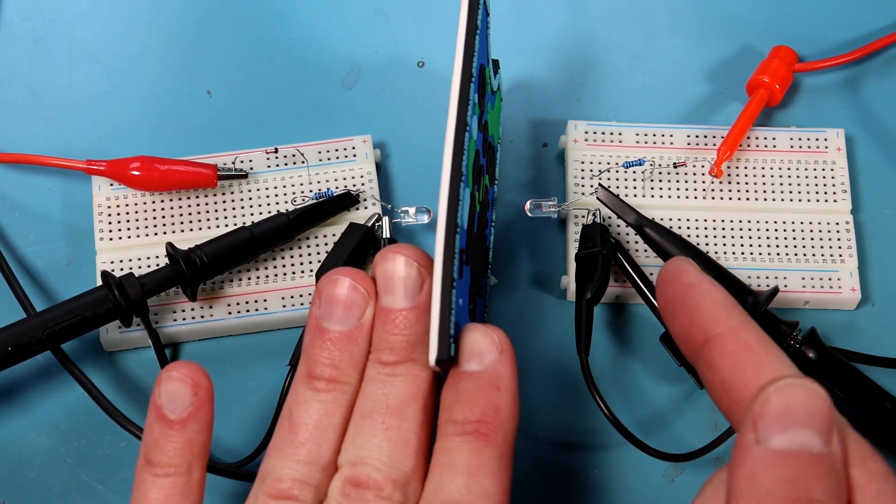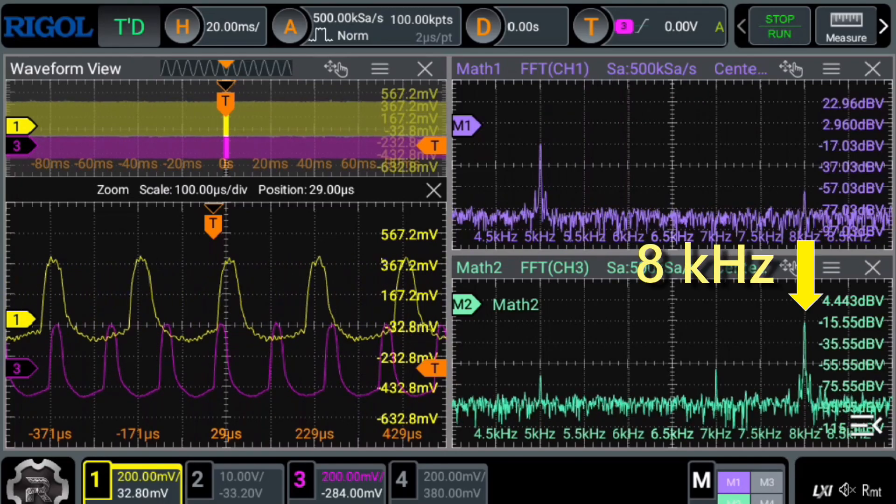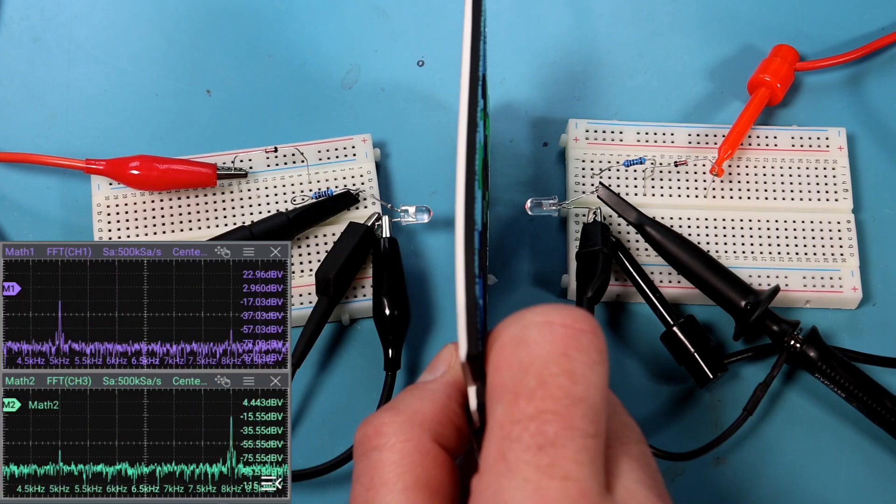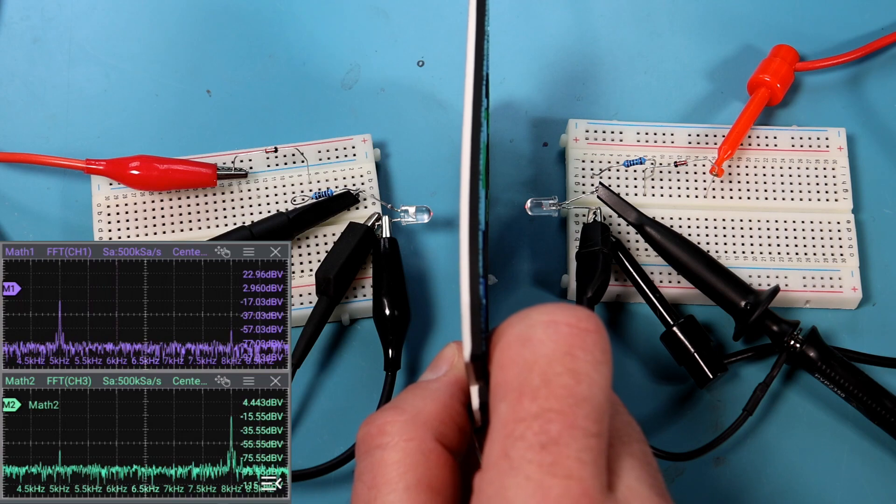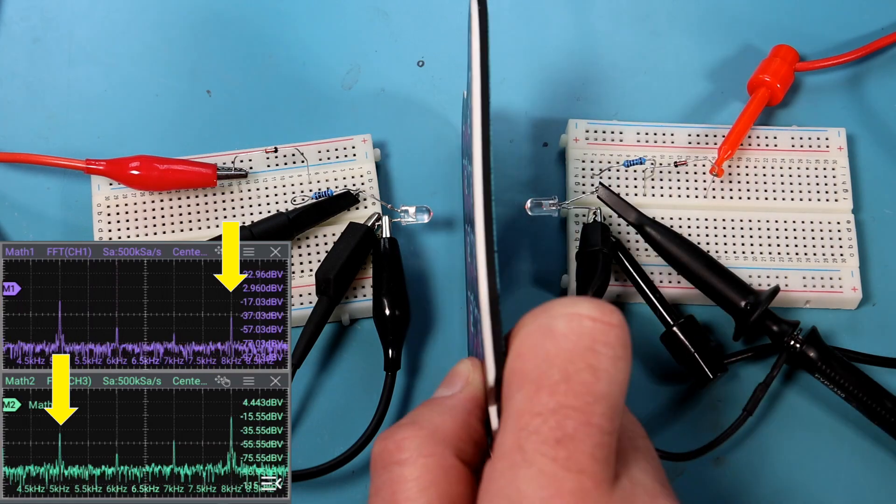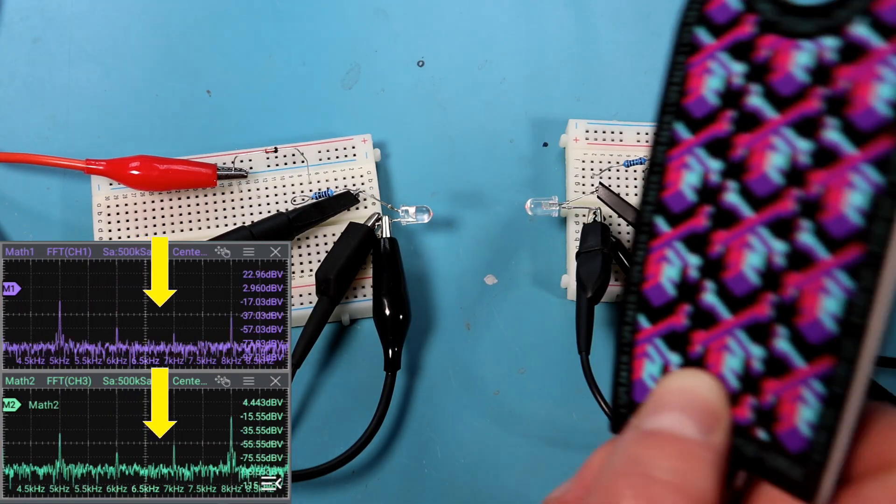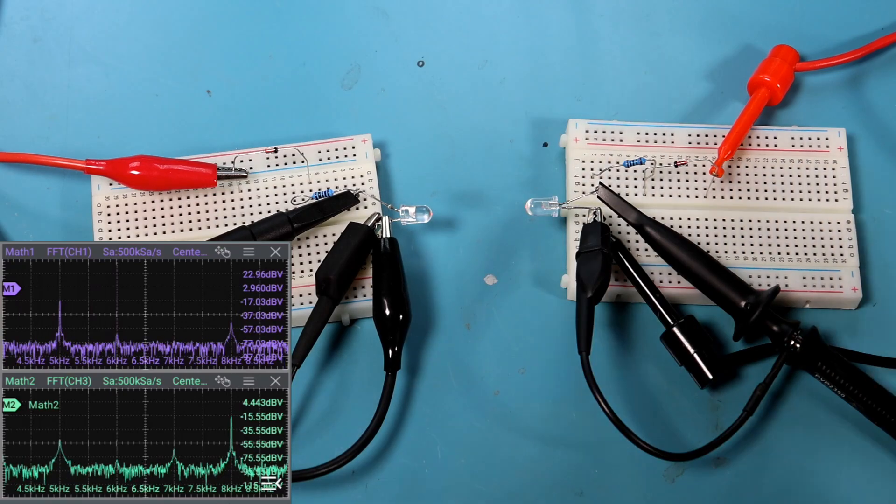Notice how when we look at the spectrum of the signal on each LED, we see the driving tones, 5kHz for the left, and 8kHz for the right. However, when we remove the optical barrier, we suddenly see both tones on both sides. The LEDs are both transmitting and receiving. You can also see some mixing products as the two tones and their harmonics and their intermodulation products are all being mixed together by the diodes on both sides.